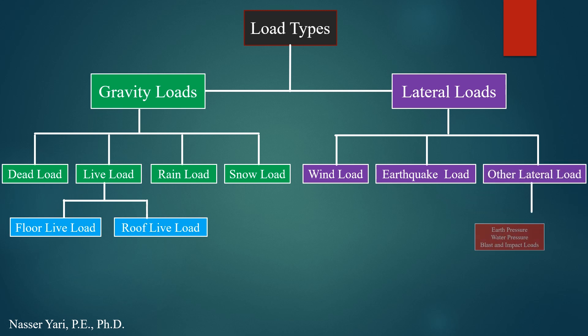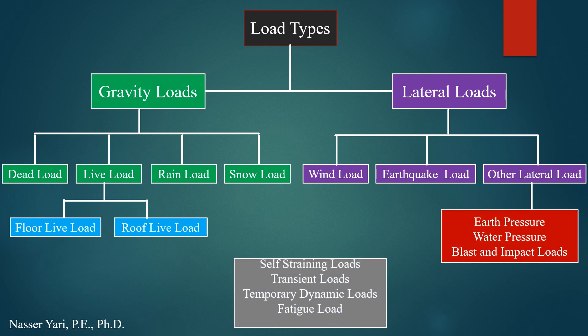When you look at the beam, the loads on beam are given either in pounds per foot or kips per foot, or in SI system will be newton per meter or kilonewton per meter. Loads on the floor or a roof are given in pounds per square foot or kips per square foot, or in SI unit will be newton per meter squared or kilonewton per meter squared. And loads on column are given in pounds or kips, or in SI unit will say newton or kilonewton.